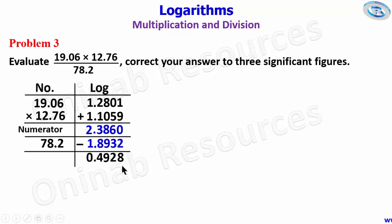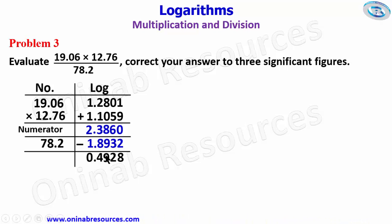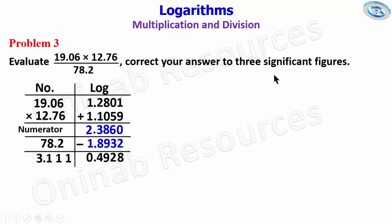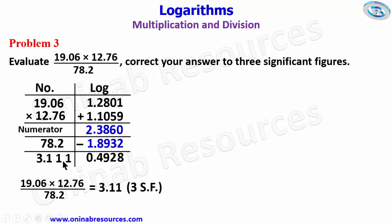From the difference we now find the antilogarithm, keeping the integer part. From the antilogarithm table: 49 under 2, differences of 8, gives 3111. Adding 1 to the integer part 0 gives 1, and we place our decimal point. The evaluation gives 3.111, but corrected to 3 significant figures: 19.06 times 12.76 divided by 78.2 equals 3.11. This last 1 is not up to 5, so it is rounded down, leaving 3.11 as the final answer to Problem 3.